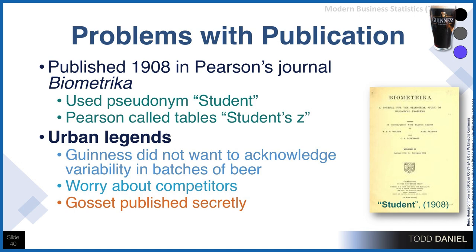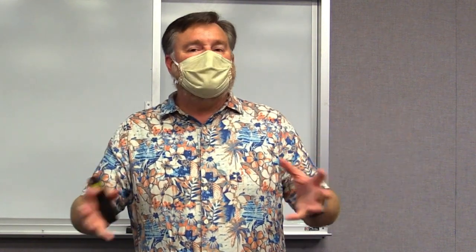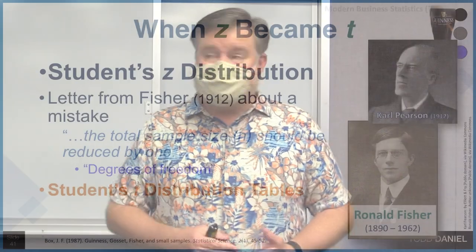It was originally called Student's z-distribution, referring to the z-distribution of the normal curve. In 1912, Carl Pearson, the author of the journal, received a letter from a young Ronald Fisher describing a mistake in the publication of these tables. Fisher described that the sample size n should be reduced by one in what he called degrees of freedom. Everything about degrees of freedom and n-1 is the summation of work done by William Seeley Gossett, Carl Pearson, and Ronald Fisher, resulting in what we have today as Student's t-distribution tables.